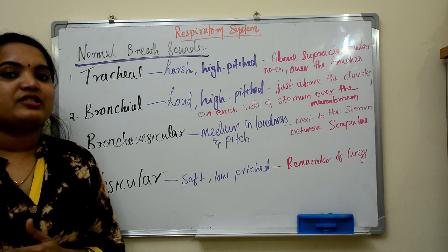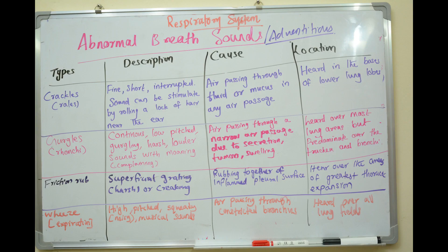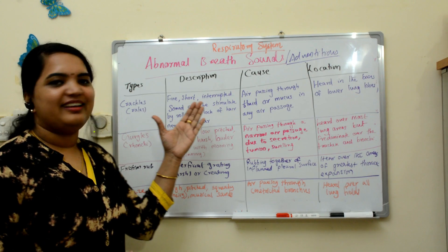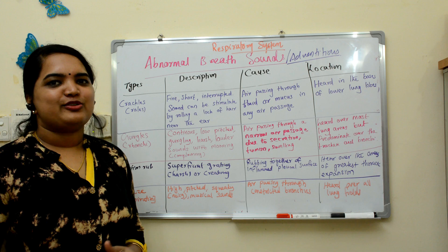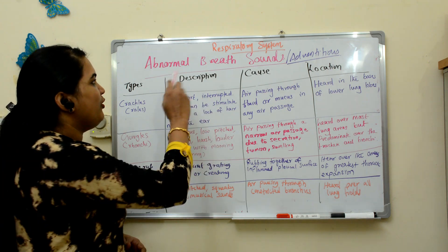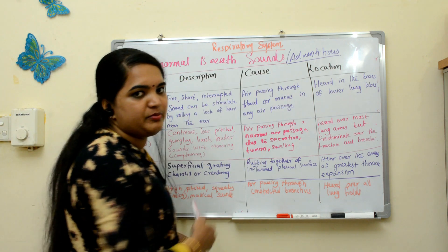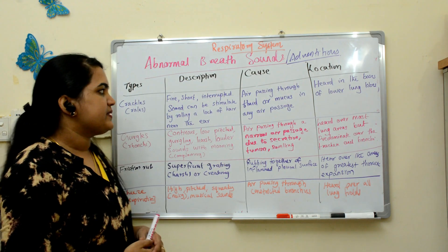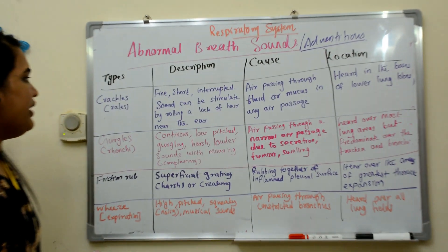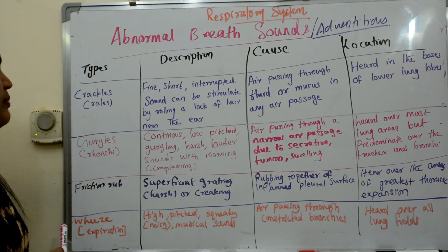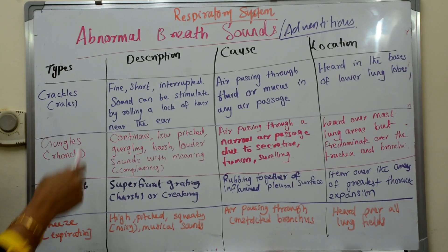Next, we will move on to the adventitious breath sounds. We have seen the normal breath sounds, so now we can go to the abnormal or adventitious breath sounds. There are mainly four types of adventitious breath sounds.